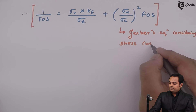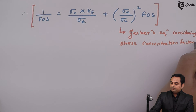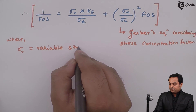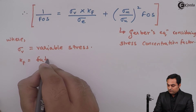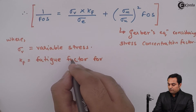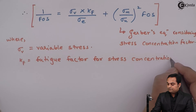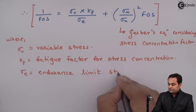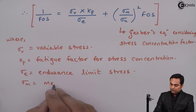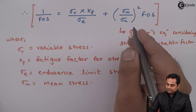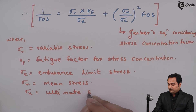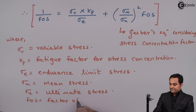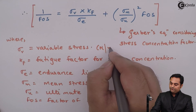In this equation considering the stress concentration factor, the terms are defined as: Sigma V is variable stress, K_F is the fatigue factor for stress concentration, Sigma E is the endurance limit stress, Sigma M is mean stress, Sigma U is ultimate stress, and FOS is the factor of safety. All stress values have units of Newton per mm squared.